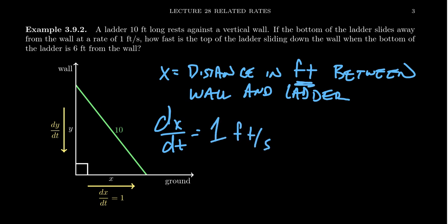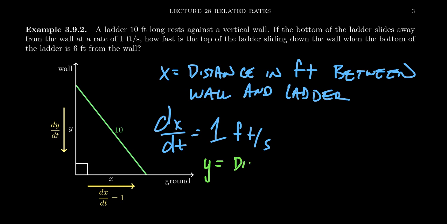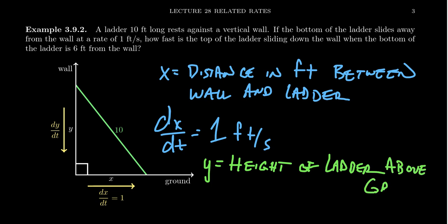We're measuring distance in feet and time in seconds, so it's slipping very quickly — must be a very slick piece of ice. If the ladder stays next to the wall, as the bottom slides away, the top has to fall down. This introduces our next variable. Let's suppose Y equals the height of the ladder above the ground.